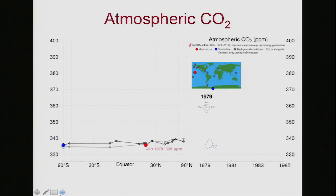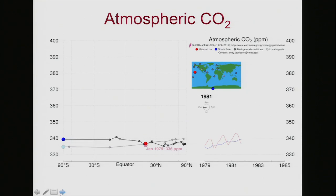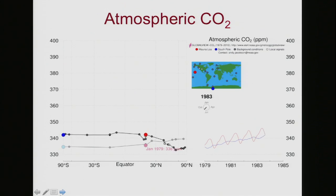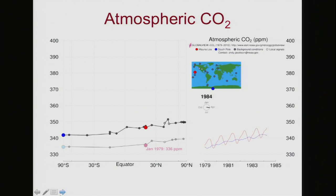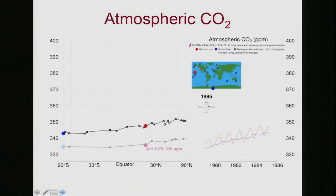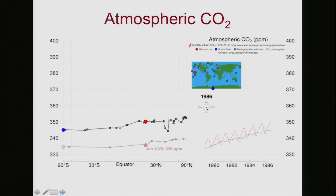So in 1979, we had only 336 parts per million. Through time this whole line is rising from the South Pole to the North Pole. The rise and fall is higher in the northern hemisphere because there's a lot more industrial activity up there. On the right you can see this sort of yo-yo going along with an annual cycle.